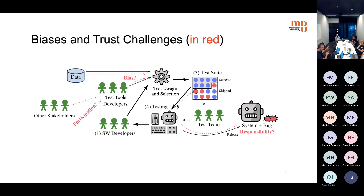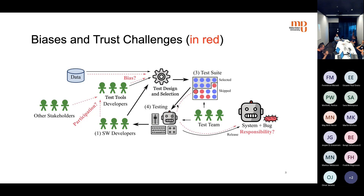As opposed to most research related to test automation, which focuses on poor quality and how to make it better, we're looking at unethical and untrustworthy aspects of test automation — it's a different perspective. This could include poorly generated or selected test cases, biased data, poor understanding of decision making by the humans using these systems, or implementation problems because a stakeholder was not involved during development. Here we focus on some of them, shown on the slide in red with a question mark.